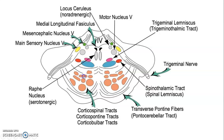The basal pons contains corticospinal, corticopontine, and corticobulbar tracts. You have the raphe nuclei, which are serotonergic; the trigeminothalamic nuclei forming the trigeminal lemniscus; the spinothalamic tract within the spinal lemniscus; the mesencephalic nucleus of trigeminal; the main sensory nucleus of trigeminal; and the locus coeruleus, which are noradrenergic nuclei of the reticular formation. The motor nucleus of trigeminal is also here. Note: the spinal nucleus of trigeminal is located in the medulla.